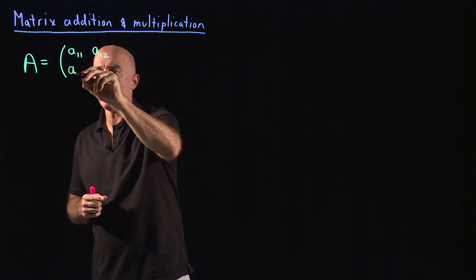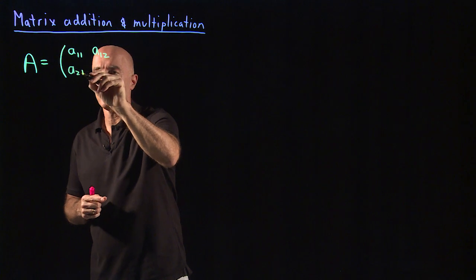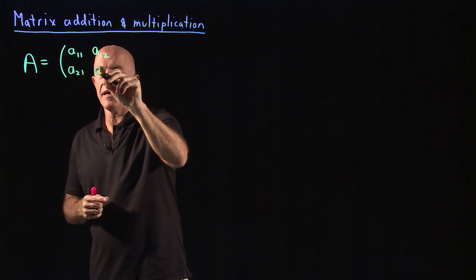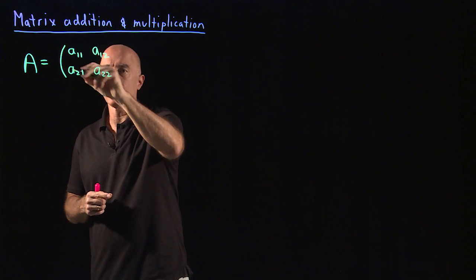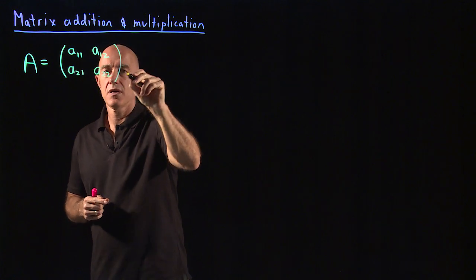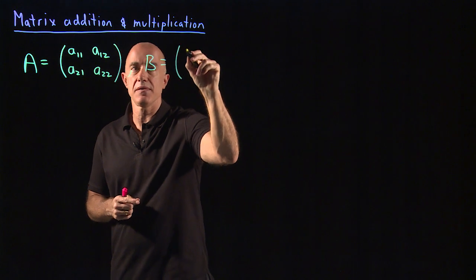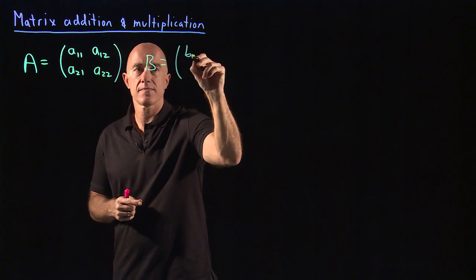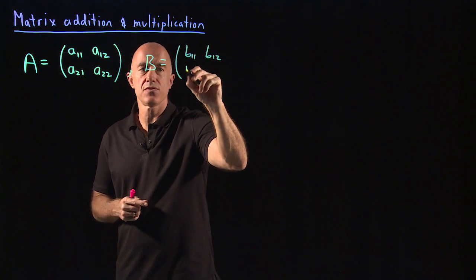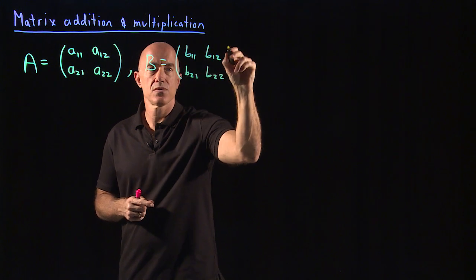Then A21, meaning row two, column one, and A22, meaning row two, column two. At the same time we'll need a B matrix: B11, B12, B21, and B22.